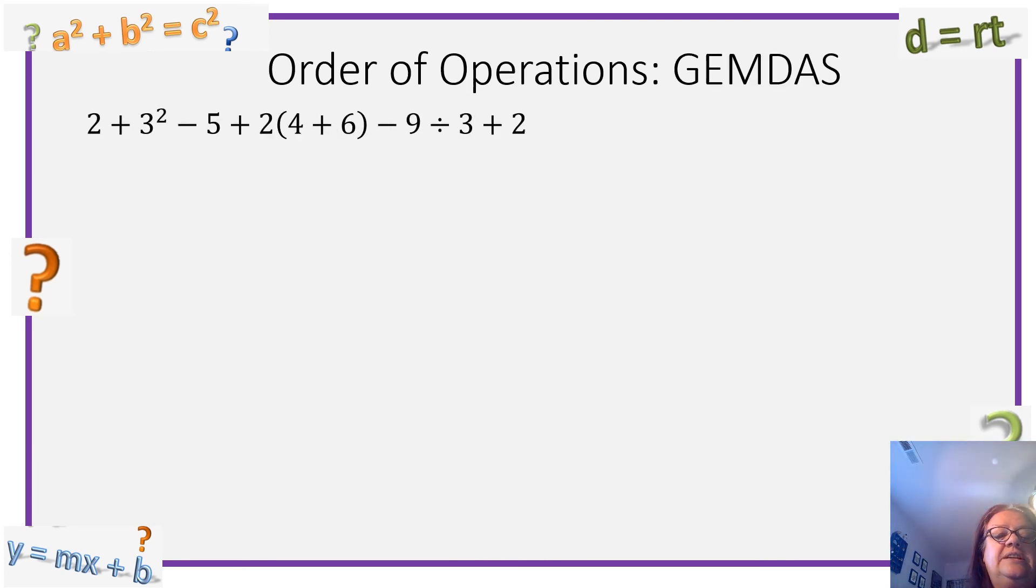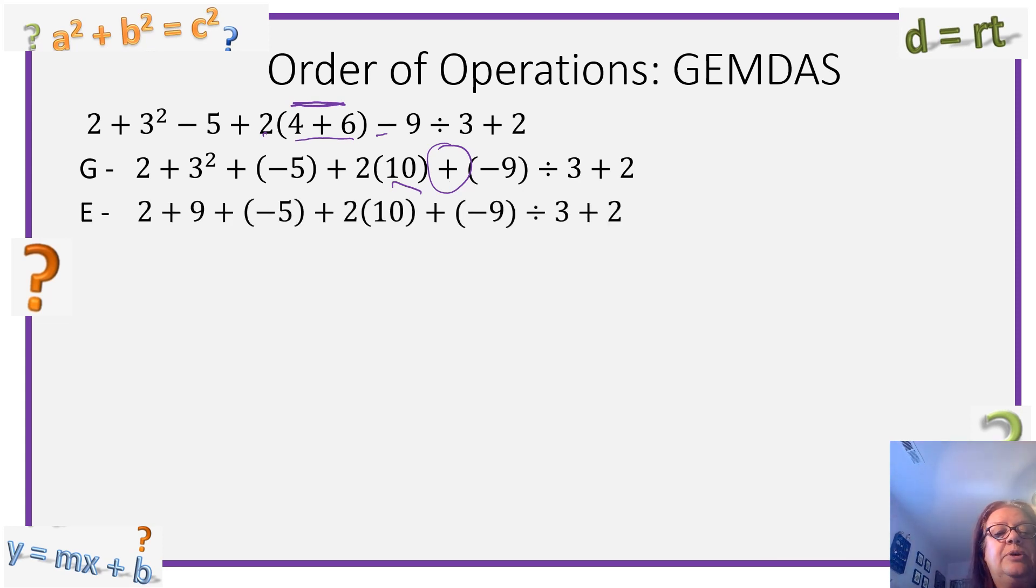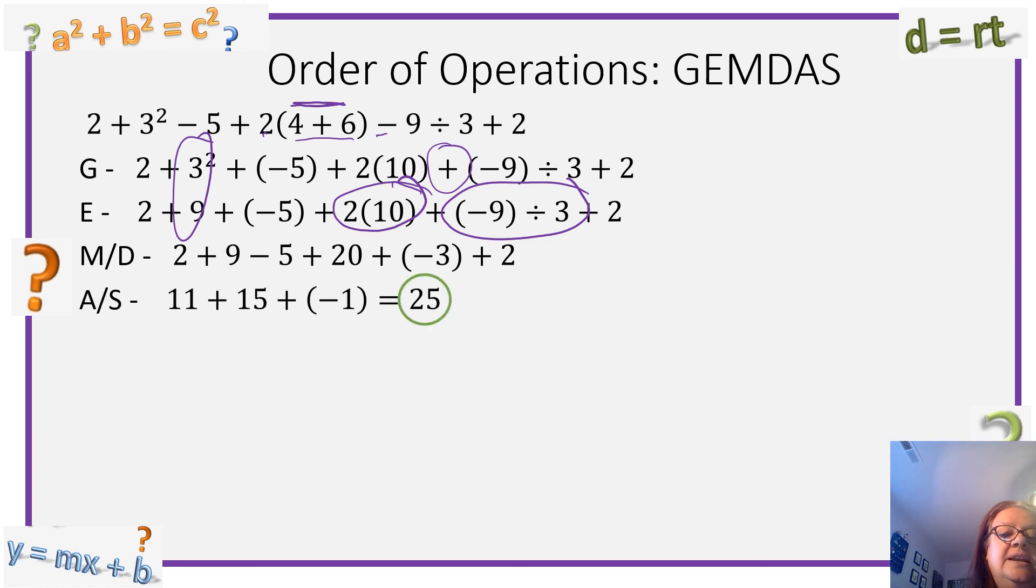We're going to do some more examples here. If I was given this big, long thing to simplify. Grouping first. So I would have to do this 4 plus 6. I've got a negative 5 plus 2 times the 4 plus 6 is 10 minus 9. And what I did is I also converted all the subtractions to plus negatives. That helps me be able to move things around. Grouping exponents. So I converted the 3 squared. Next is multiplication division. So I did this multiplication and I would do this division. So that's where I got the 20 and the negative 3. Now I would do all my adds and subtracts. So I would end up with, that's 26 minus 1 is 25.